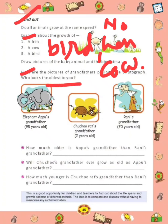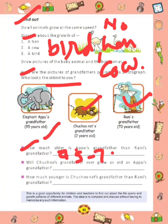Here are some pictures of grandfathers posing for a photograph. Who looks the oldest to you? In the first picture, this is elephant Apu's grandfather, whose age is 95 years. Second is Chuchu the rat's grandfather, whose age is 2 years old. Third is Rani's grandfather, who is 70 years old. Now there is a question: how much older is Apu's grandfather than Rani's grandfather? You have to find the difference: 95 minus 70, so the difference is 25.